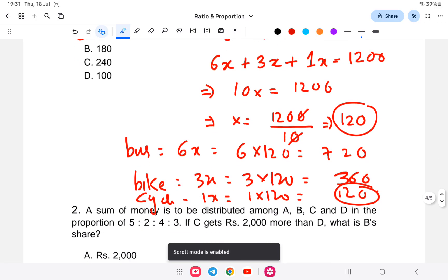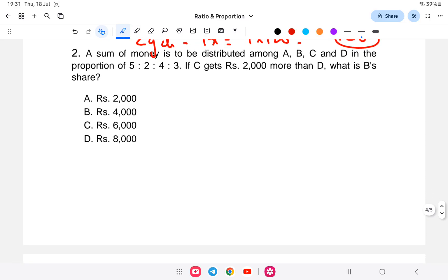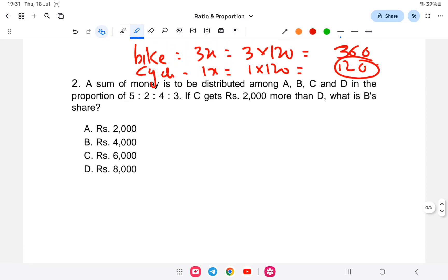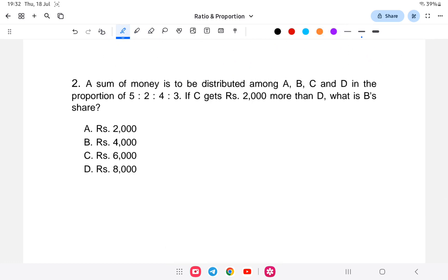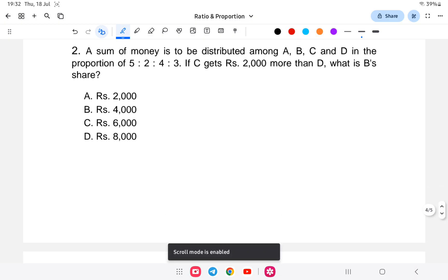Let us go to question number two. A sum of money is to be distributed among A, B, C, D in the proportion 5:2:4:3. If C gets 2000 more than D, then what is B's share?